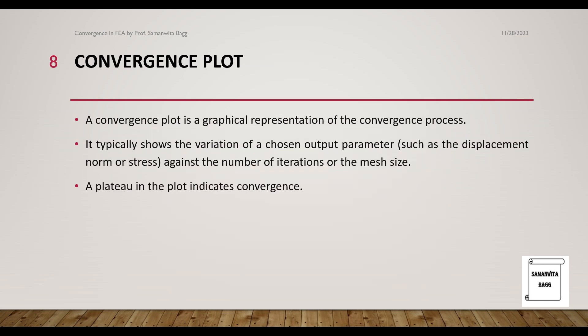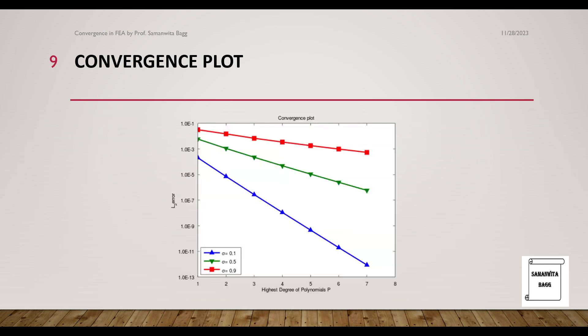A convergence plot is a graphical representation of the convergence process. It typically shows the variation of a chosen output parameter, such as the displacement norm or stress, against the number of iterations or the mesh size. A plateau in the plot indicates convergence. When I look at this diagram which I have here, you can see that this is showing convergence which is moving towards the exact value.